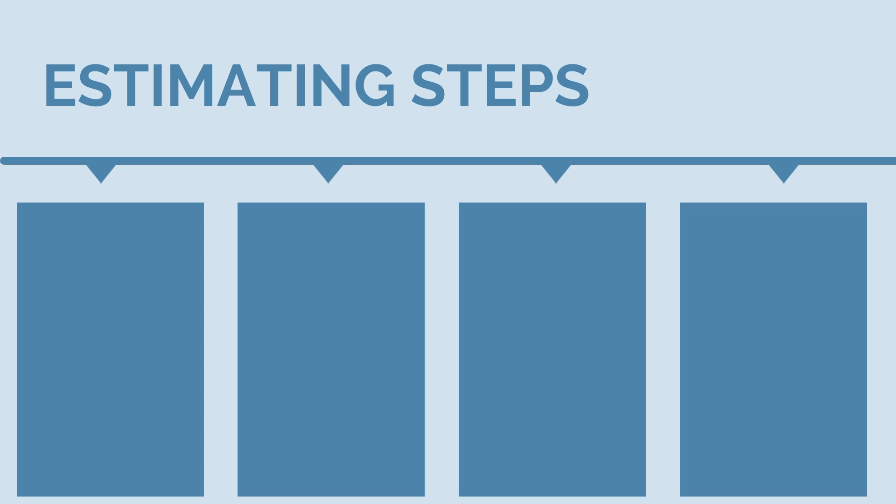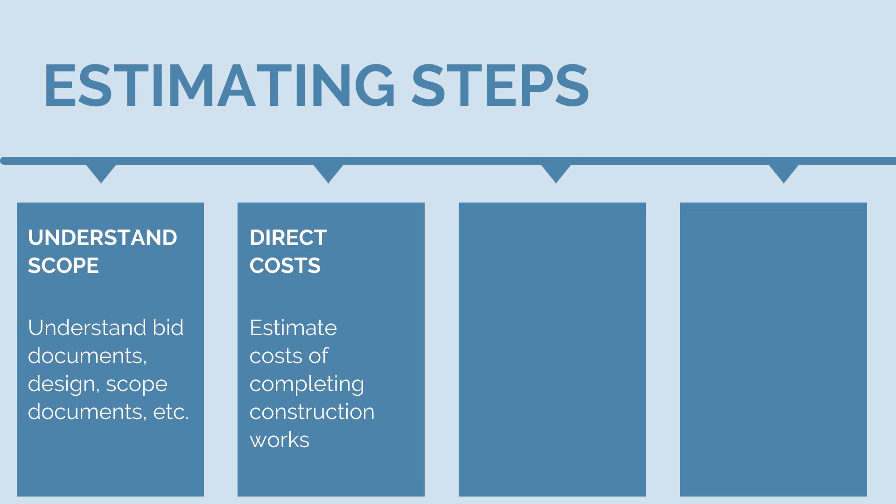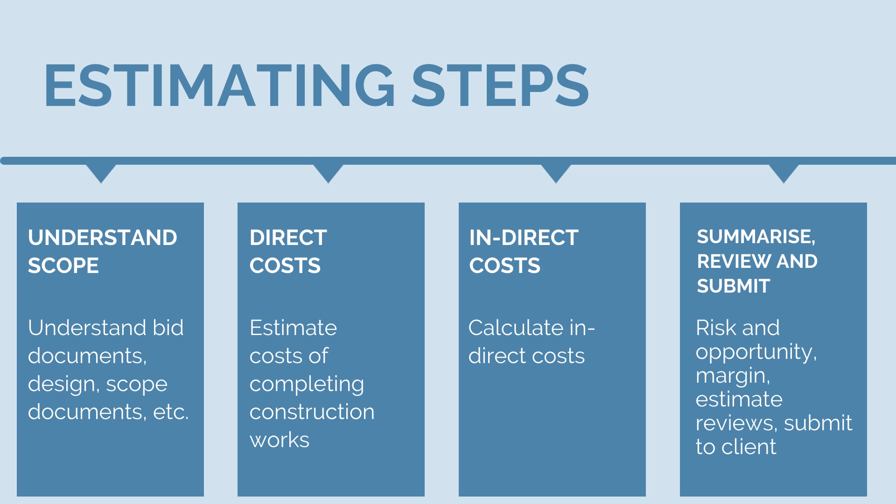Let's break this down into a series of logical steps. To estimate any project's costs, there are four basic steps. Step one is to understand the project scope — we'll need to review the design, specifications, tender documents and anything else provided to work out what we need to be doing. Next, we'll calculate direct costs: the costs of completing actual construction works. Then, once we know or roughly know our direct costs, we can work out our indirect costs. Steps two and three will occur iteratively. Then in step four, we'll need to summarise, review and submit our estimate.